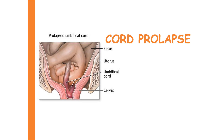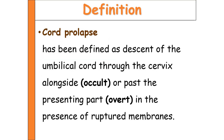Today we are discussing cord prolapse, one of the main obstetrical emergencies. Cord prolapse means a descent of the umbilical cord through the cervix alongside or past the presenting part in the presence of ruptured membranes — that is, the umbilical cord will be lying on one side of or in front of the presenting part after rupture of the membrane.